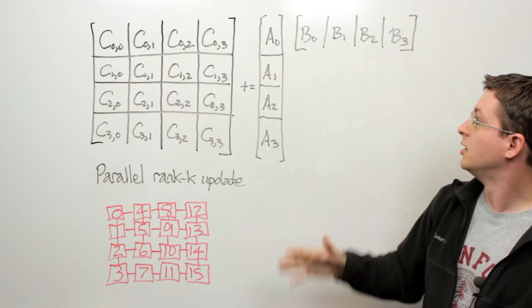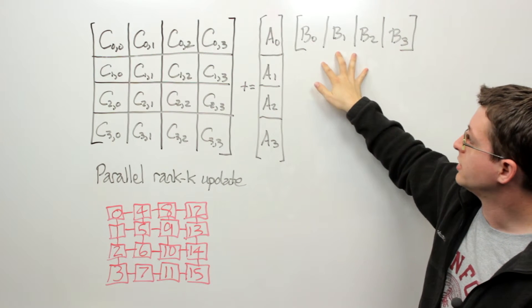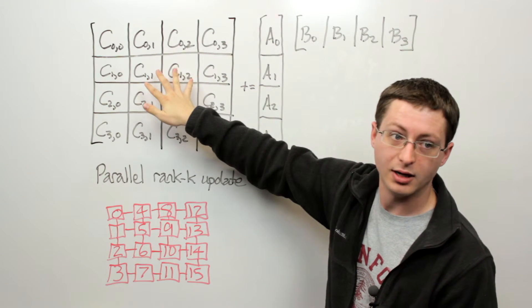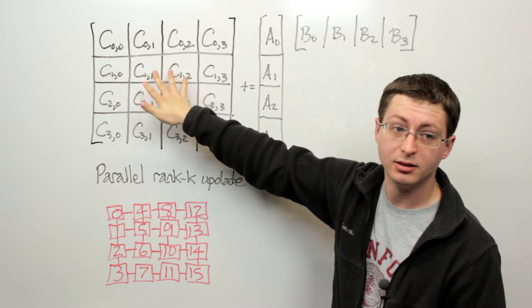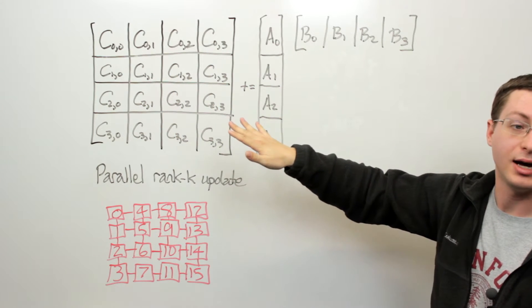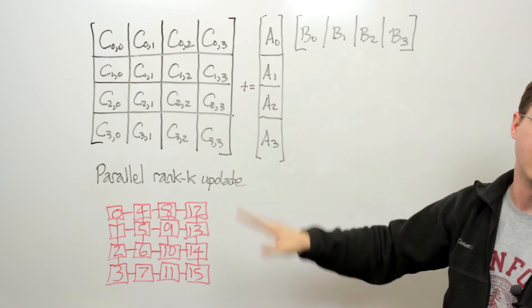And of course a similar argument applies to B. If it was originally just a row of some matrix distributed like C, then what we would need to do is broadcast pieces within columns.